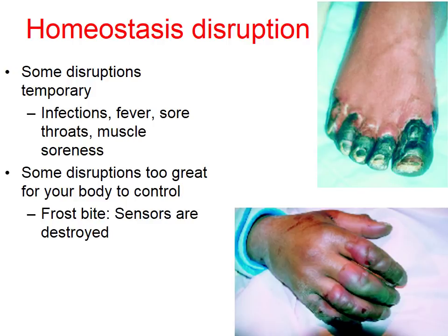Not all homeostatic disruption is temporary — sometimes it's permanent. Here are two examples of frostbite. This person's hand and fingers were clearly exposed to cold for too long. You can see that the cells of the toes are beginning to turn black — they're dying. Ultimately, the sensors in the toes aren't going to work anymore, and they won't be able to send or receive signals from the brain, so homeostasis is disrupted simply because there's no communication between the toes and fingers.